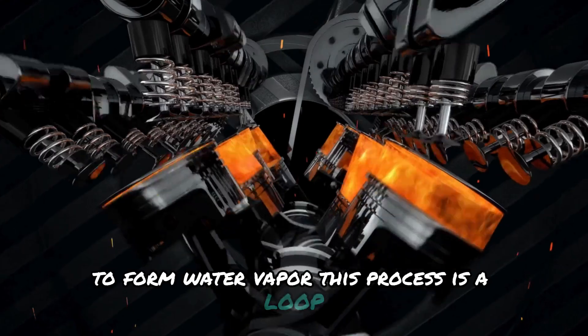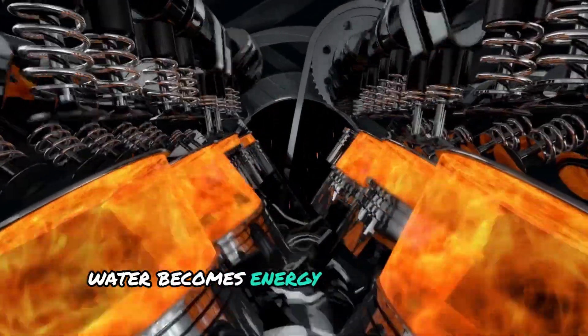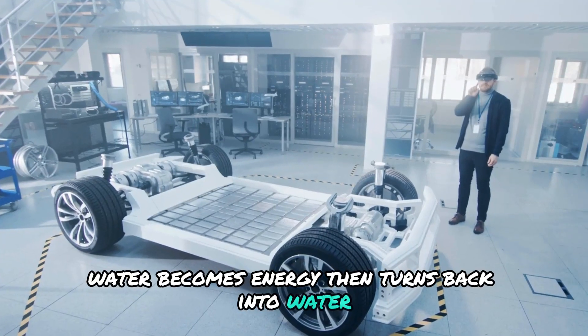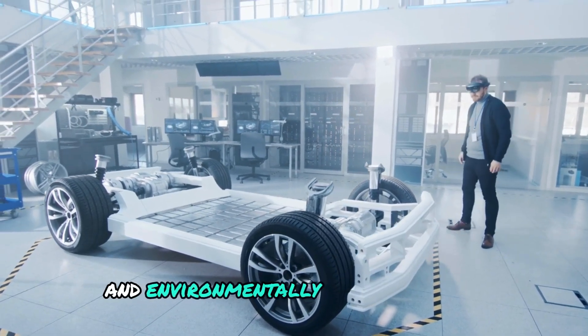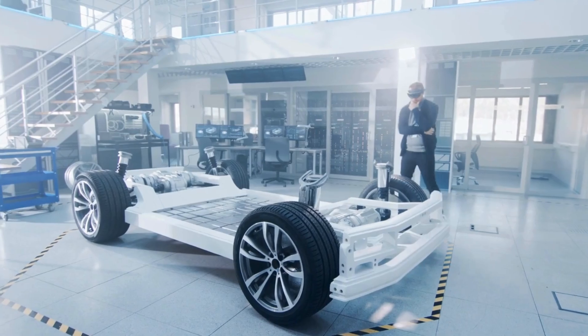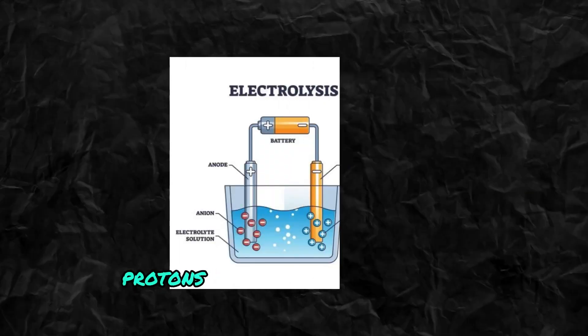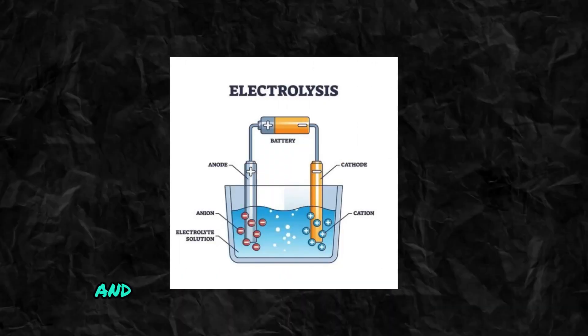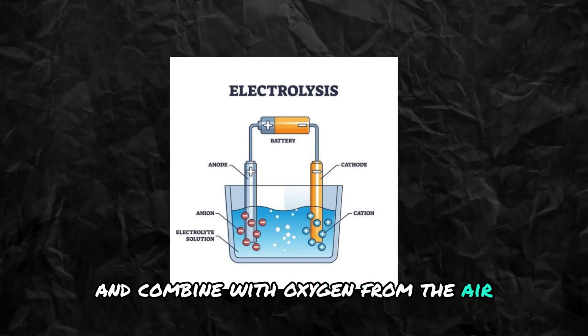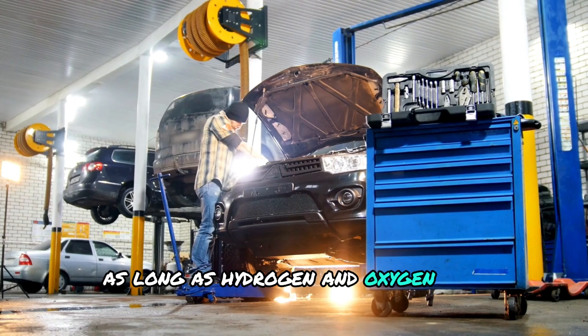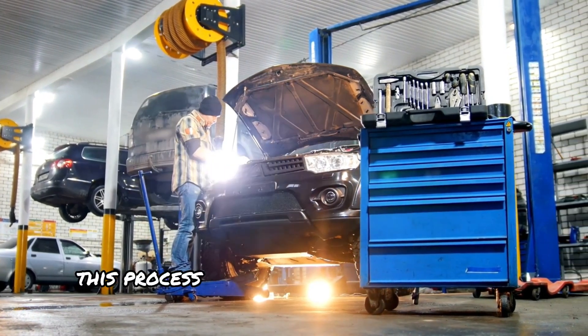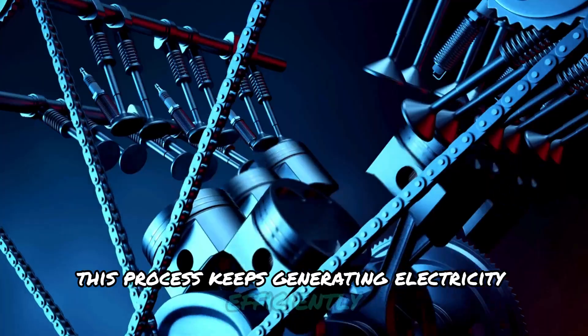This process is a loop. Water becomes energy, then turns back into water. It's a game-changer for creating sustainable and environmentally friendly energy. Inside the fuel cell, protons move through a special membrane and combine with oxygen from the air to produce water vapor. As long as hydrogen and oxygen are provided, this process keeps generating electricity efficiently.